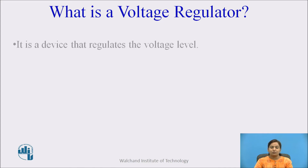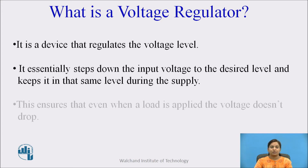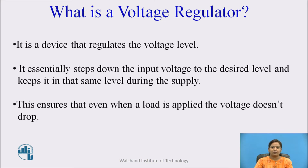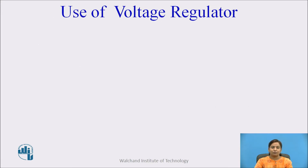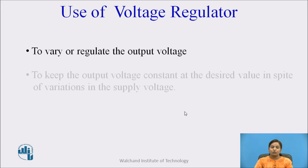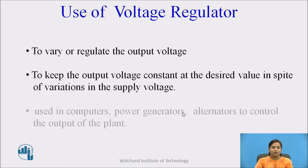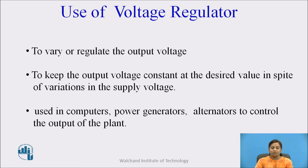What is the voltage regulator? It is the device that regulates the voltage level. This essentially steps down the input voltage to the desired level and keeps it at the same level during supply. This ensures that even when the load is applied, the voltage does not drop. The voltage regulator is used to regulate the output voltage and to keep the output voltage constant at a desired value. Voltage regulators are used in computers, power generators, and alternators to control the output of the plant.